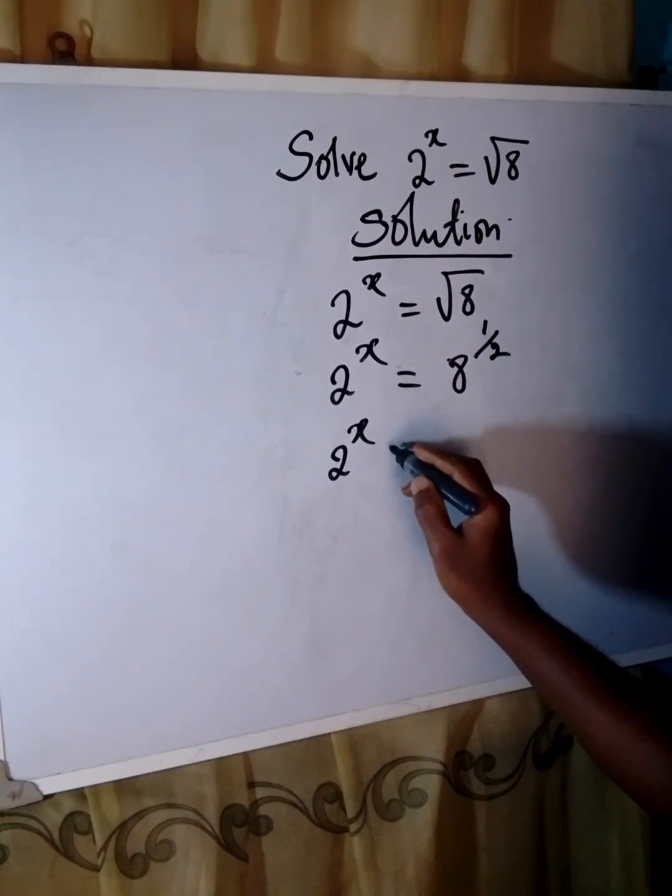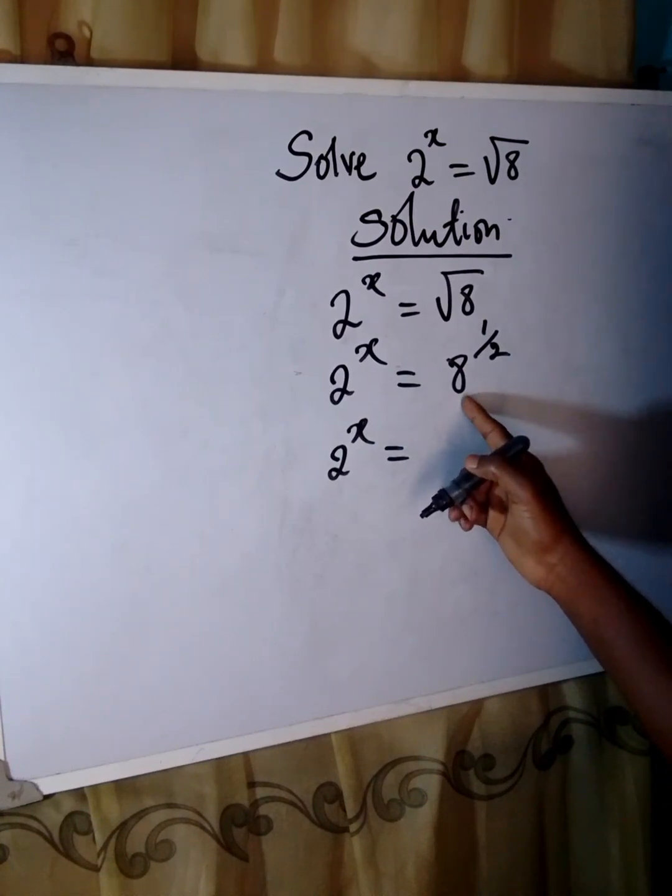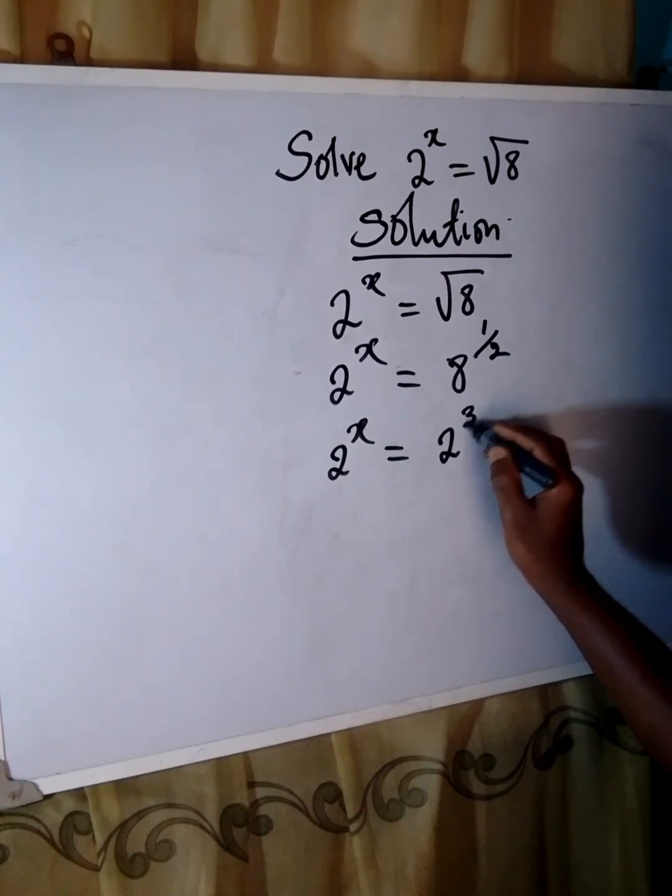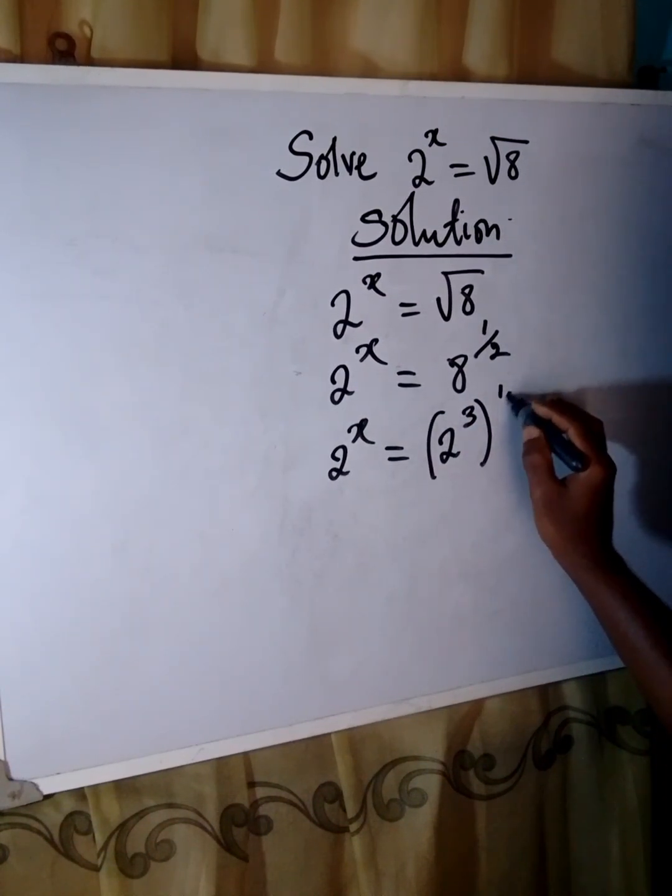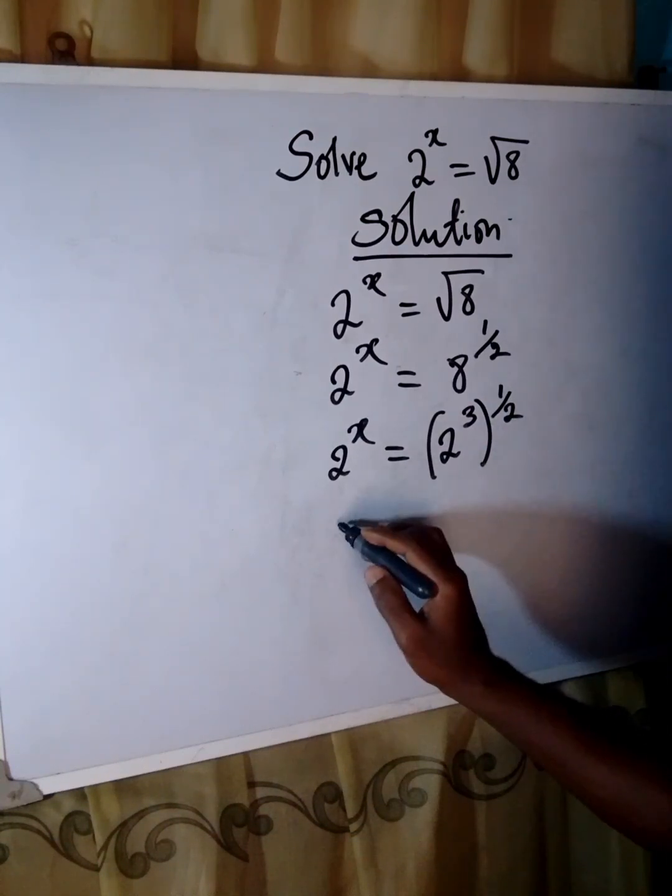Now, we have 2 to the power of x, and 8 on its own is 2 to the power of 3. And there is a power of 1 over 2 on the outside.